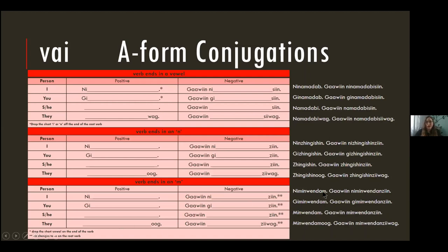You'll notice on the negative form there's a double asterisk, which means the M is going to change to an N on the root verb. So it's no longer minwendom, it becomes minwendon. Ga ween ni minwendom zee. Does anybody have any questions about those?